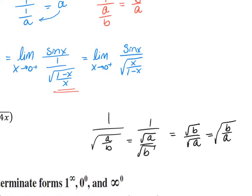Going back to our limit here. Now we ask ourselves: does L'Hopital's work? Let's check — if I put in x goes to zero, I'm going to end up with zero in the numerator and zero in the denominator. So yes, I can use L'Hopital's at this point and do the derivative of the numerator and the derivative of the denominator separately.